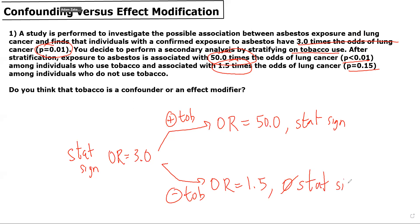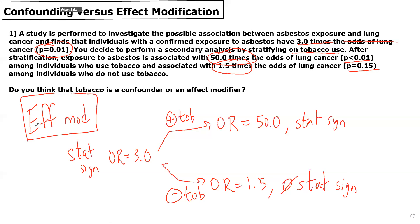As we learned, if something is a confounder, then stratifying on that confounder will eliminate the association in both of the stratified groups. Whereas in this case, we feel this fits best as an effect modifier, because after stratification, we find that the association between asbestos exposure and lung cancer — our primary exposure and outcome — varies significantly between these two stratified groups, with it being significantly strengthened among individuals who use tobacco and weakened among individuals who do not use tobacco.